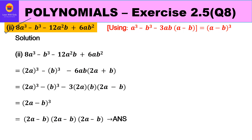In the second part we have the same terms: 8a³ - b³ - 12a²b + 6ab². The only difference is the minus signs. In the first part we had all plus signs; here we have minus signs too. So it will clearly match the identity (a-b)³, whose expansion is a³ - b³ - 3ab(a-b).